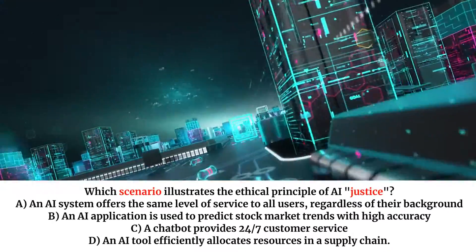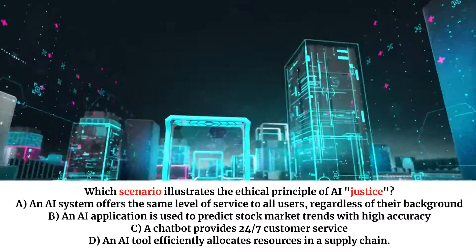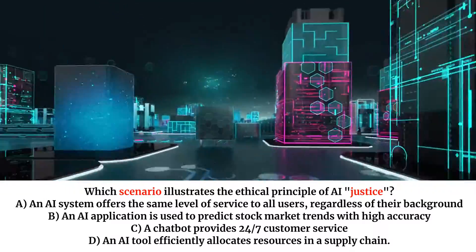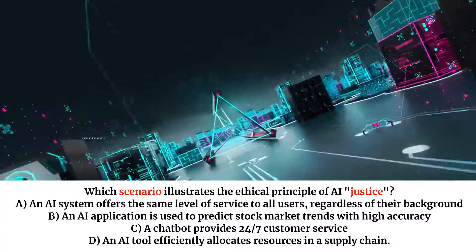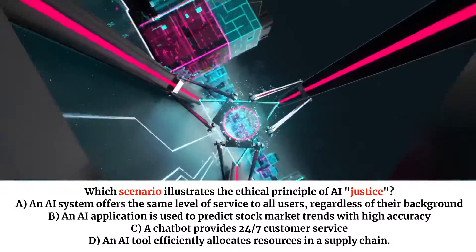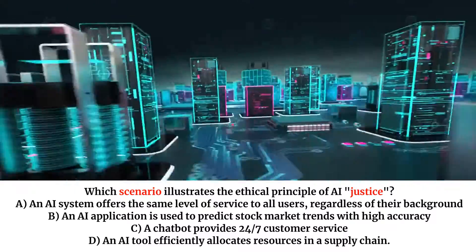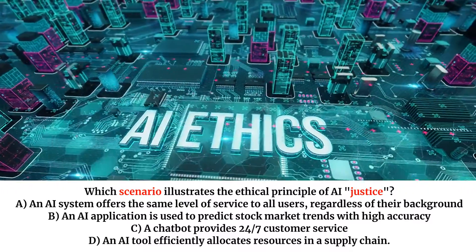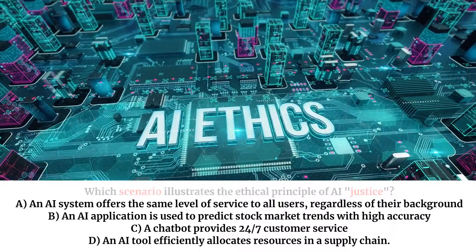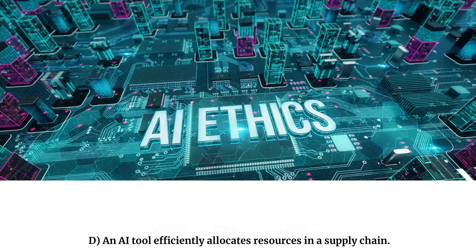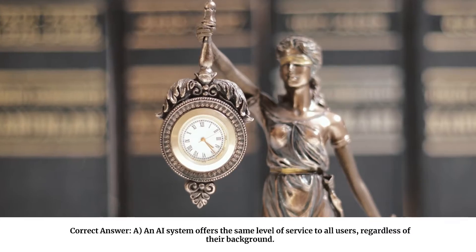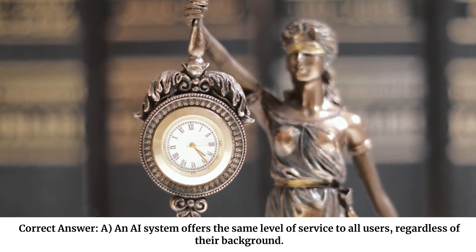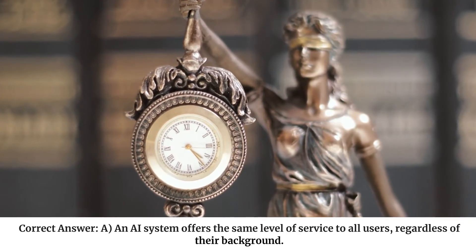Which scenario illustrates the ethical principle of AI justice? A. An AI system offers the same level of service to all users, regardless of their background. B. An AI application is used to predict stock market trends with high accuracy. C. A chatbot provides 24/7 customer service. D. An AI tool efficiently allocates resources in a supply chain. Correct answer: A. An AI system offers the same level of service to all users, regardless of their background.